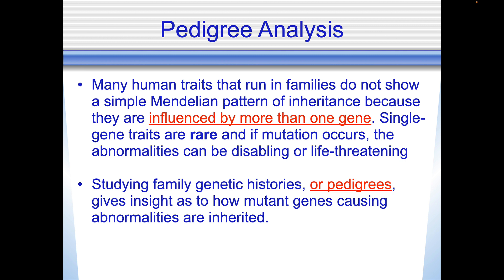Many human traits that run in families do not show a simple Mendelian pattern of inheritance because they're influenced by more than one gene — single gene traits are rare. If a mutation occurs, the abnormalities can be disabling or life-threatening. Studying family genetic histories or pedigrees gives insight into how mutant genes causing abnormalities are inherited.